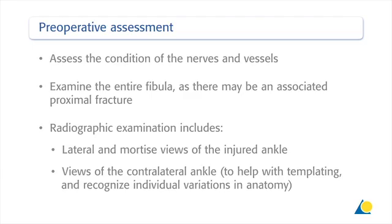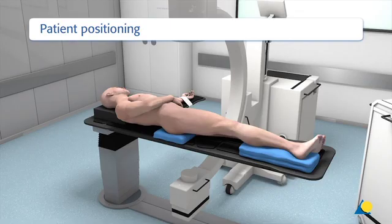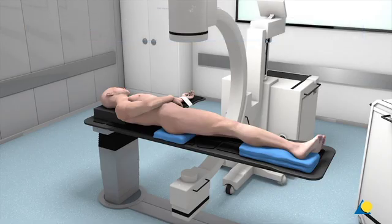Preoperative preparation is essential. Clinically, it is important to assess the condition of the nerves and vessels and examine the entire fibula, as there may be an associated proximal fracture. Radiographic examination includes lateral and mortise views of the injured ankle and views of the contralateral ankle to help with templating and recognise individual variations in anatomy. The patient is positioned on a radiolucent operating table in a supine position with supports under the hip, and a sandbag under the ipsilateral buttock rotates the limb and allows lateral and posterolateral access.